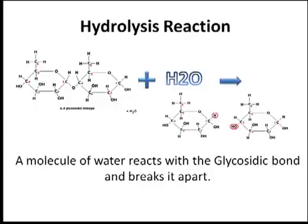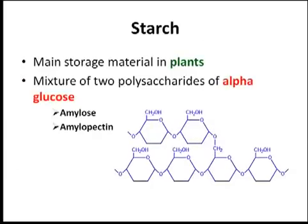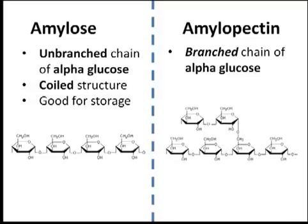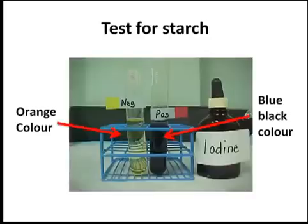Let's start with starch. Starch is the main storage material in plants. It's a mixture of two polysaccharides of alpha-glucose: amylose and amylopectin. Amylose is a long, unbranched chain of alpha-glucose with a coiled structure, which makes it compact and good for storage, whereas amylopectin is a long, branched chain of alpha-glucose. Starch is insoluble in water. The test for starch is to simply add iodine solution — if it goes blue-black, starch is present; if it stays orange, no starch is present.